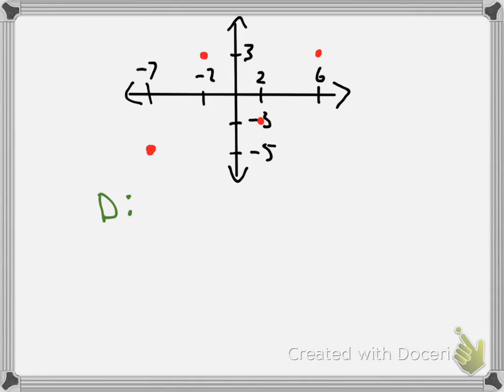For the domain, we're of course going to start with a set bracket. We're going to list out the x values because domain refers to the x values on a function. So in this case we have negative 7, negative 2, positive 2, and 6. Then we close our set bracket, and that would be our domain. Notice that I did list them in order from least to greatest. In a set it's not technically necessary, but this is a convention followed to make sure everyone has exactly the same answer.